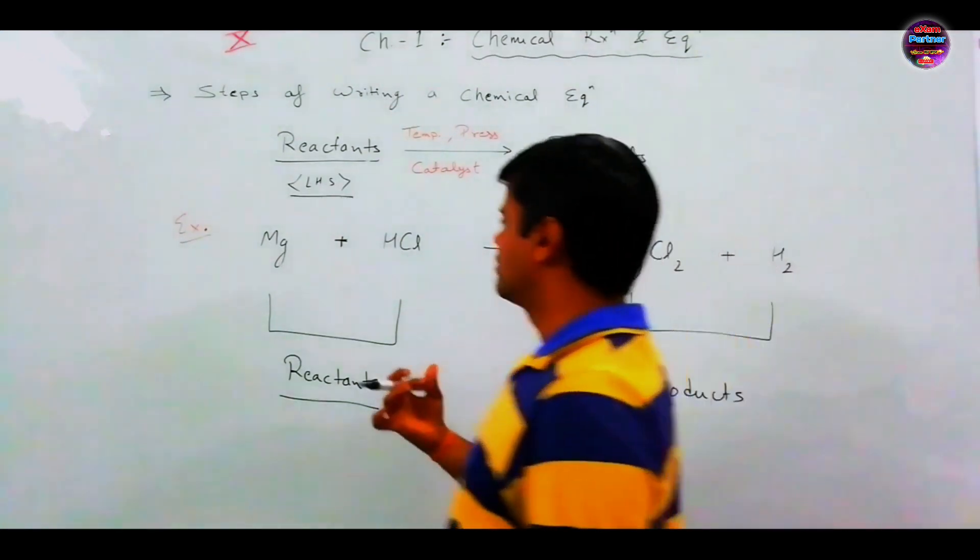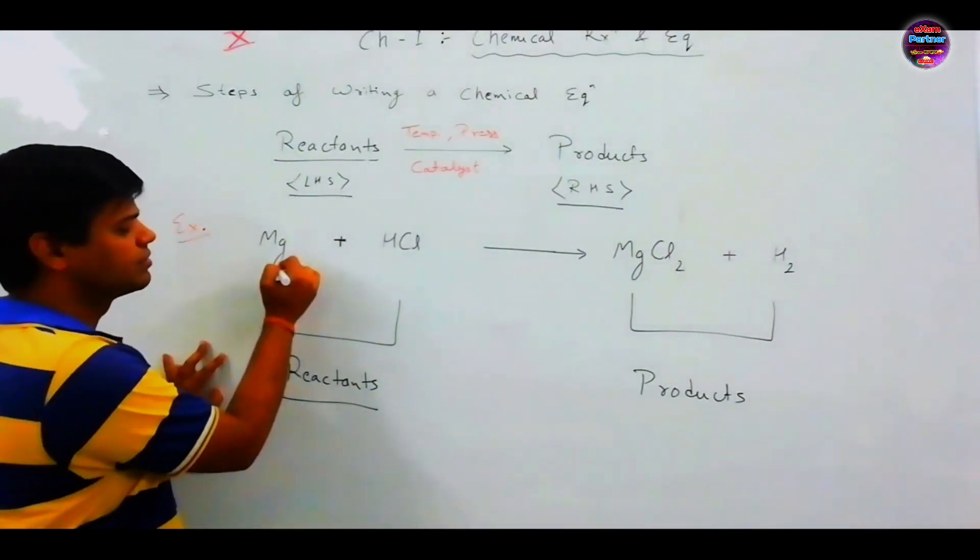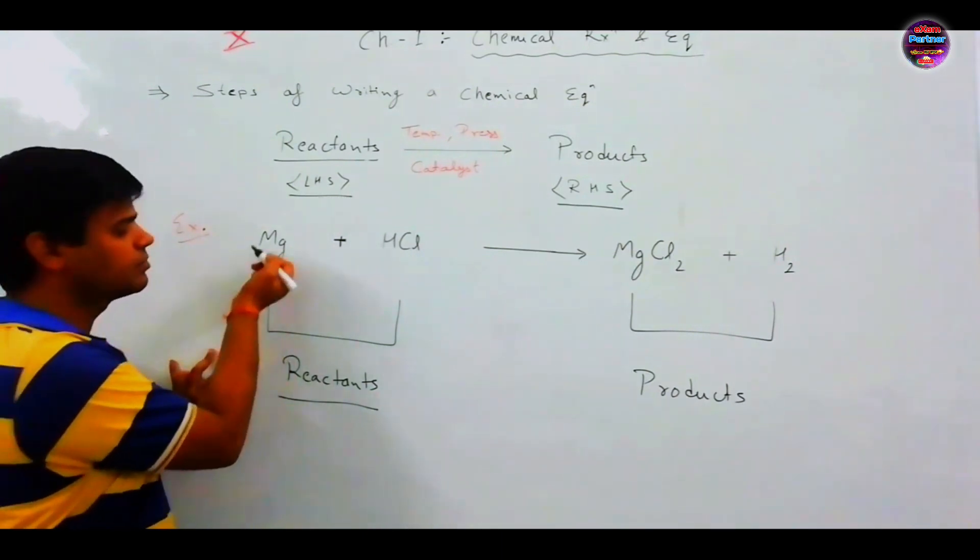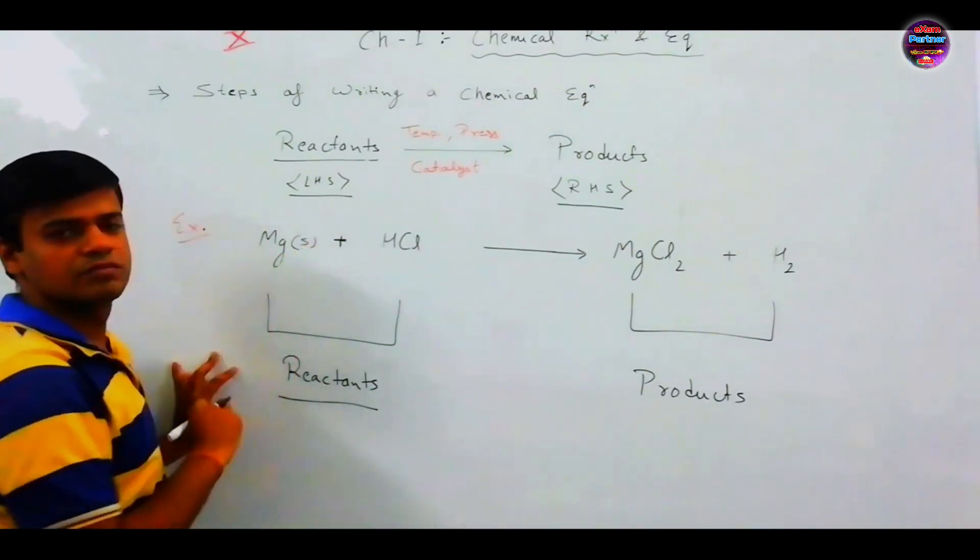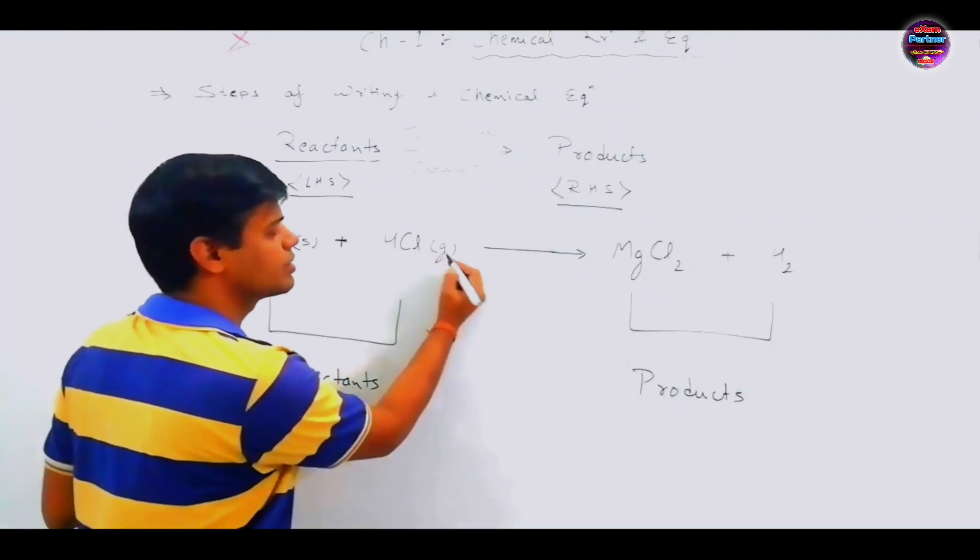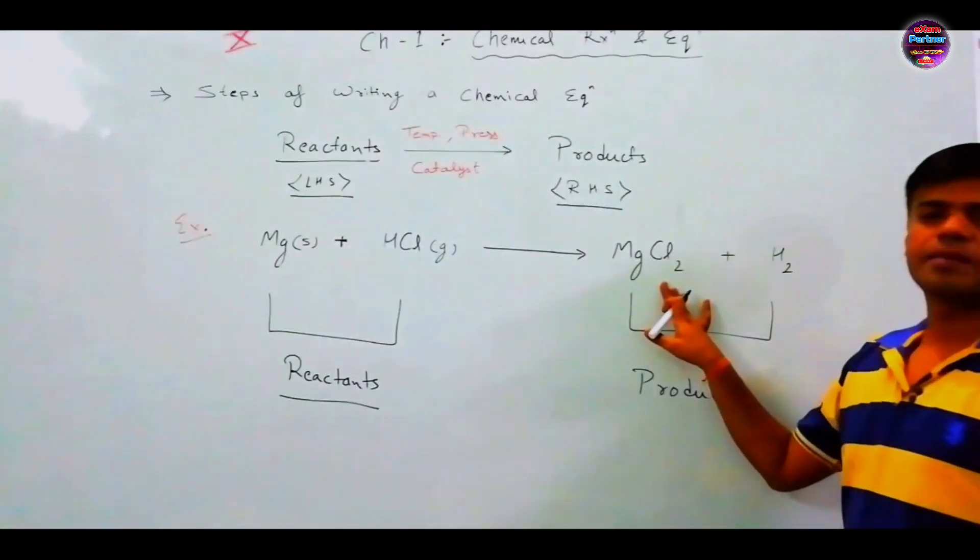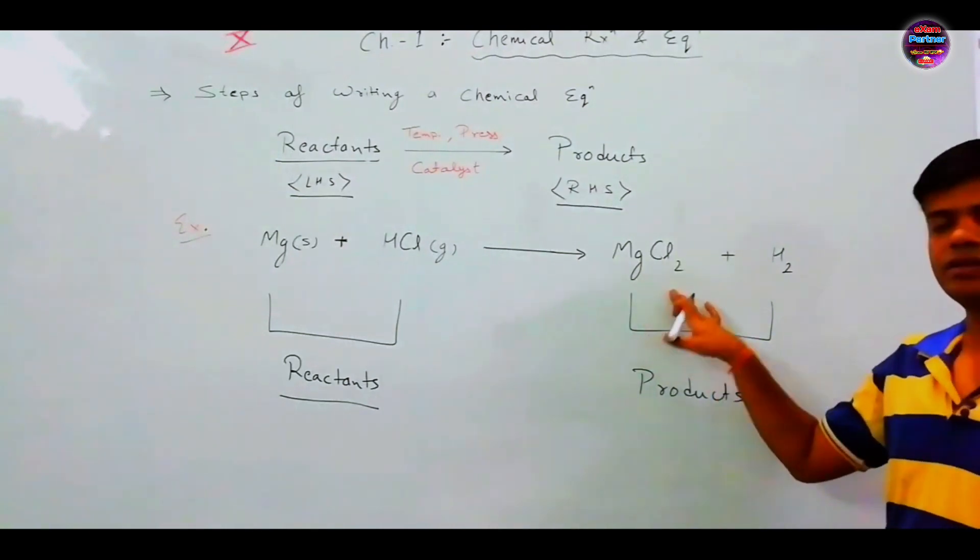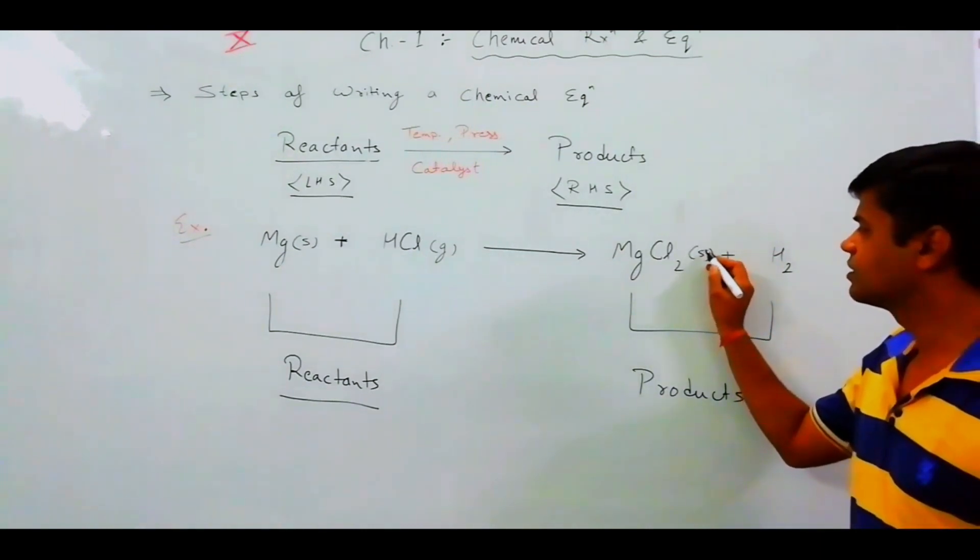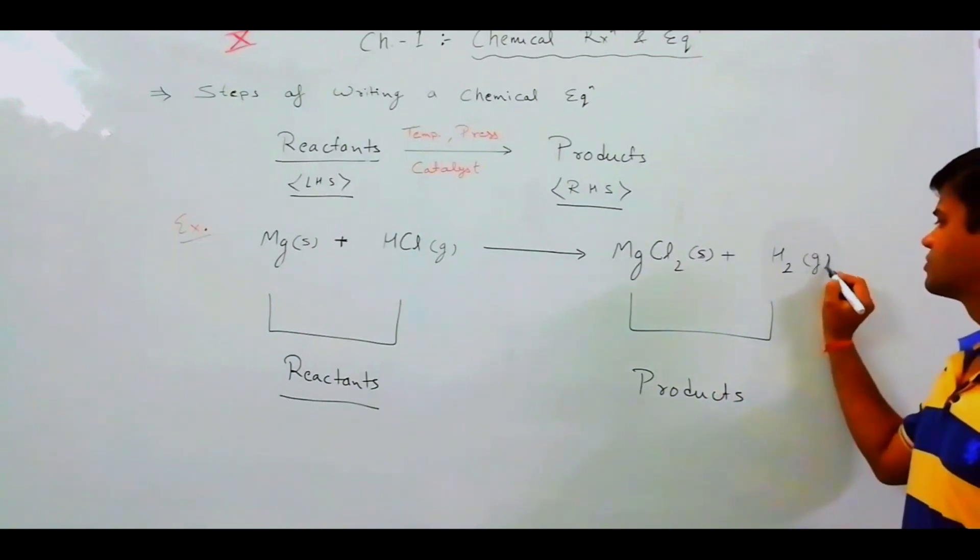Next step. Last step. When reaction is complete, reactant and products, then we choose the physical state. So, reactions and products. Magnesium is a metal. I can say solid, S. HCl, Hydrogen Chloride, so gas. We have to write G. Gas. Next, after reaction, magnesium chloride obtained means magnesium chloride salt. Generally, solid state exists. And hydrogen gas, G.